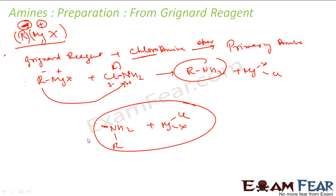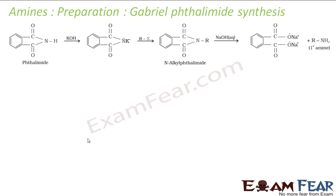This is the typical reaction mechanism for preparation of amine from Grignard reagent. The next method is Gabriel phthalimide synthesis, which is used to prepare primary amines of the RNH₂ form.